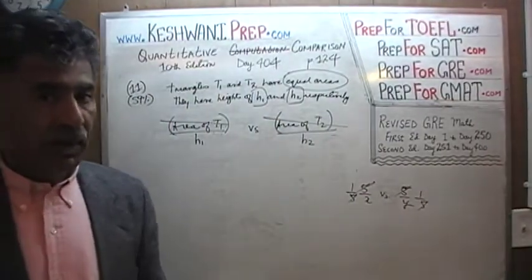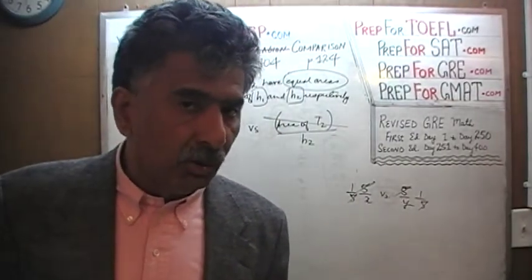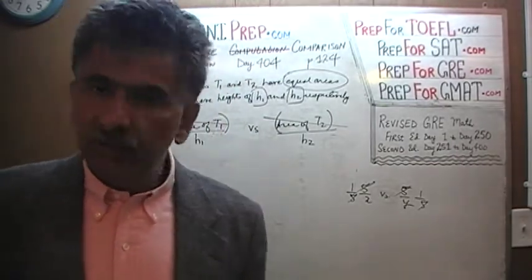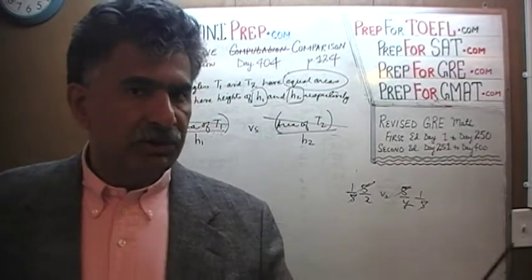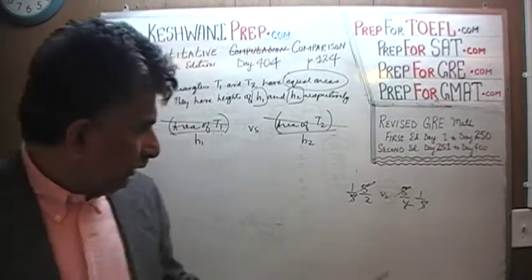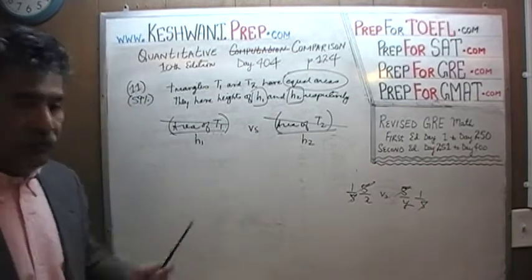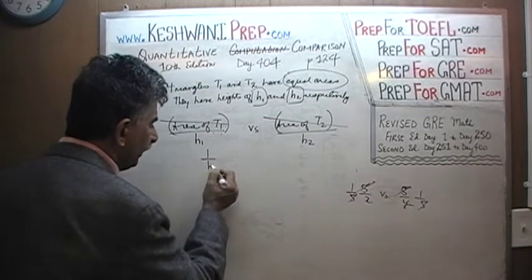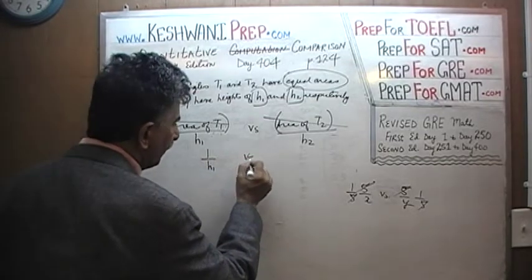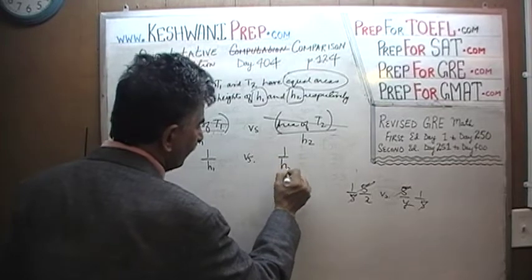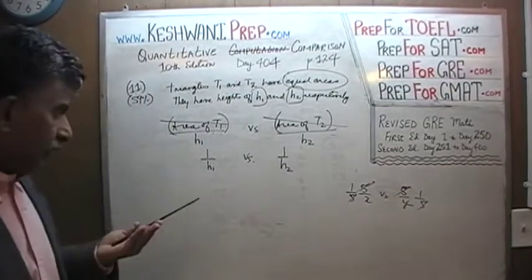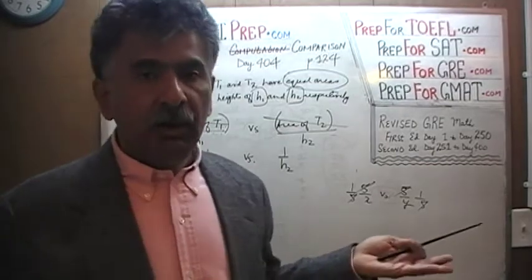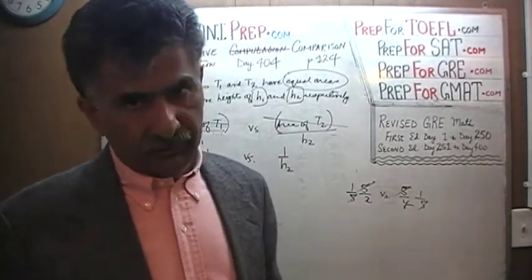We can multiply or divide both columns by any positive number. We cannot multiply by a negative number because that would change the direction of the inequality. So the area of the two triangles plays no role. What they are asking is to compare the reciprocal of the height of the first triangle versus the reciprocal of the height of the second triangle, which is the same as comparing their heights directly. So essentially they want us to compare the heights of the two triangles without telling us anything about the triangles.